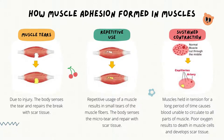Lastly, muscle adhesion can develop due to sustained contraction. Muscles held in tension for a long period of time causes blood to be unable to circulate through all parts of the muscle. Poor oxygen results in death of muscle cells and development of scar tissue.